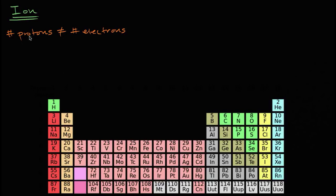You can have positive ions if the protons are more than the number of electrons — protons are positive, electrons are negative. And you can have negative ions if the number of electrons are greater than the number of protons. For example, hydrogen in its neutral state has one proton and one electron. But if you were to take one of those electrons away, then hydrogen would have a positive charge, and essentially it would just be, in its most common isotope, a proton by itself. When our protons are more than our electrons, we call these cations.